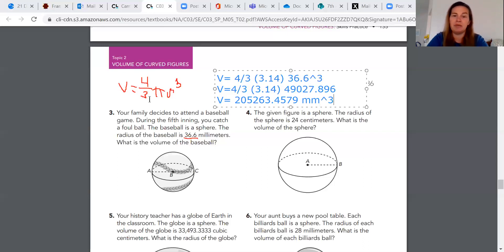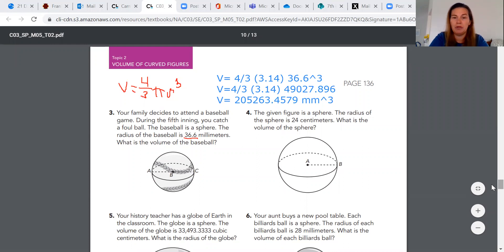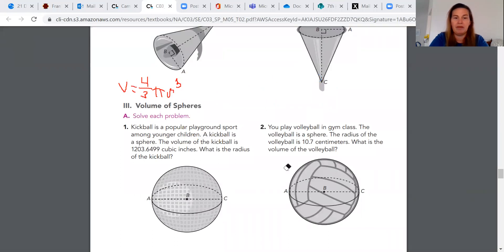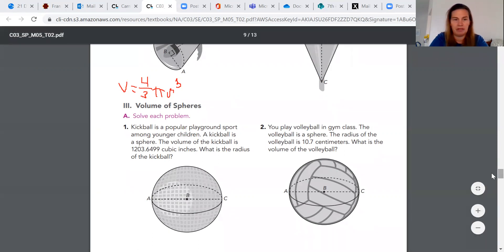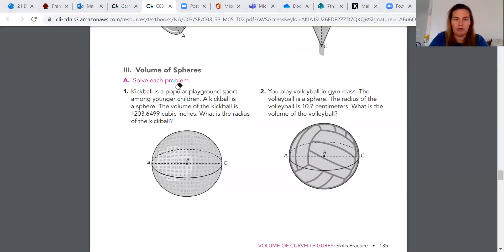Now sometimes they're going to be asking you, instead of finding what the volume is, sometimes they're going to give you the volume and you're going to need to find the radius. Because as you can see, the radius is the only other thing we don't know. We know 4/3, we know what π is equal to. So the only two possibilities we have for substitution are volume or radius. So now we're going to go back to number one.